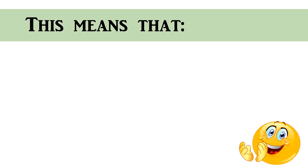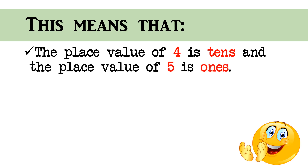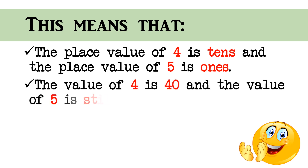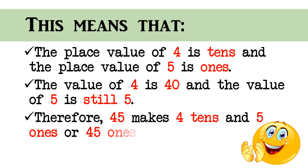This means that the place value of four is tens, and the place value of five is ones. The value of four is forty, and the value of five is still five. Therefore, forty-five makes four tens and five ones, or forty-five ones.